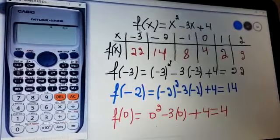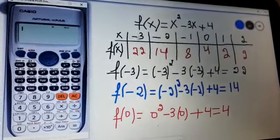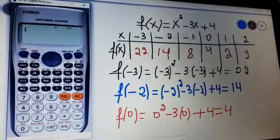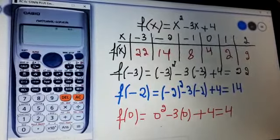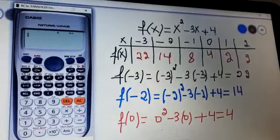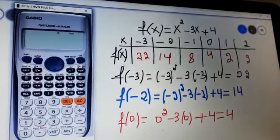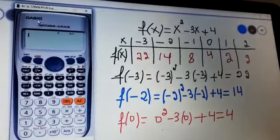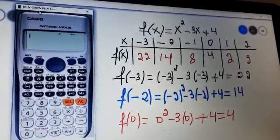In this video I will calculate the images of minus 3, minus 2, minus 1, 0, 1, 2 by a function given f(x) = x² - 3x + 4 using a calculator Casio FX 570.